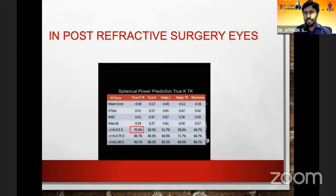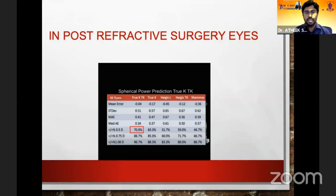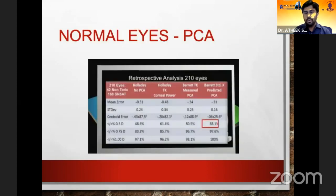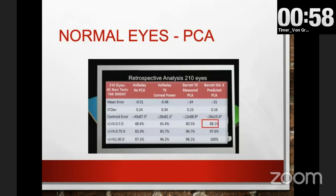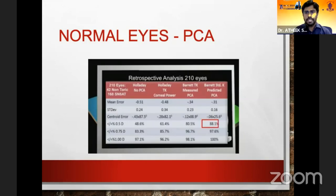Surprisingly, these readings are especially valuable for patients who have undergone keratorefractive surgery, where 70% of patients have an error of less than 0.5 diopters — which is remarkable for post-refractive surgery cases. However, for normal or virgin eyes, the Barrett predicted posterior corneal astigmatism measurement is still perfectly fine and good enough, though this may change with time.